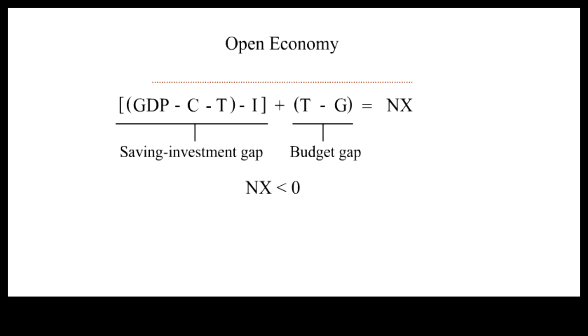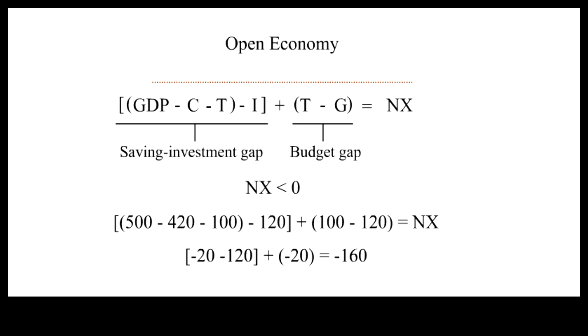When imports exceed exports, NX is negative. How might this negative NX come about? Now, let's substitute some numbers into the equation. Say GDP stays at 500, C has gone up to 420, T stays at 100, I stays at 120, T is 100 again, G has gone up to 120. So, the negative NX is generated by a negative saving-investment gap and a budget deficit.